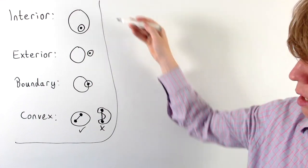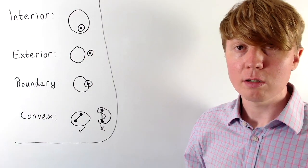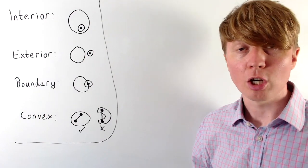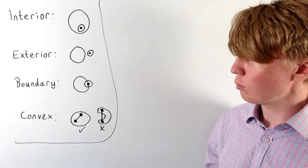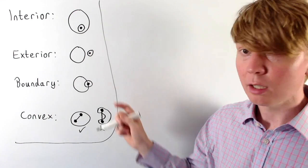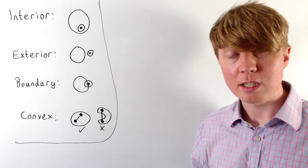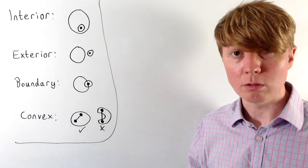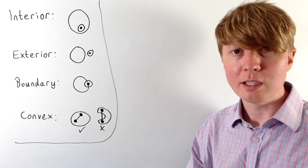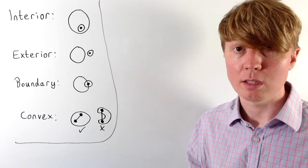The exercise we're interested in is to do with interior and boundary points of a convex set — in particular all the different pairings. For example, if you have an interior and a boundary point, we consider the line segment between those two points. Can the points on that line segment be interior points, or can they be boundary points?